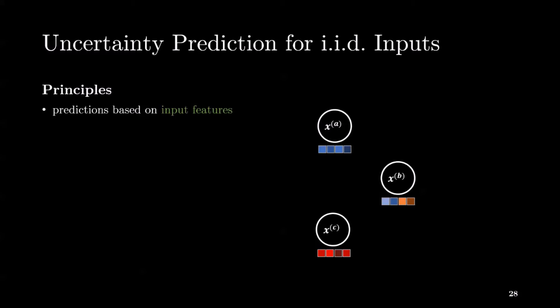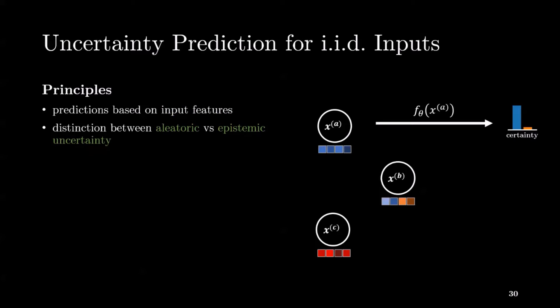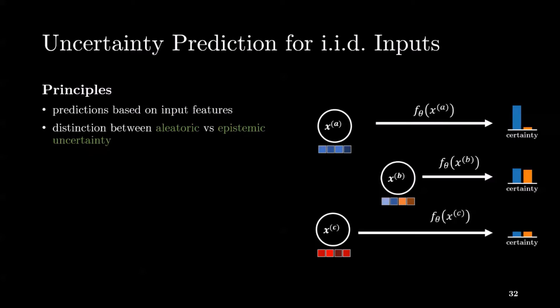Let's go back to the main motivation of our work. Uncertainty estimation for ID inputs like images or tabular data has already been explored. In this case, predictions are based on input features only and make the distinction between aleatoric and epistemic uncertainty. As already mentioned, a machine learning model would ideally assign a low overall uncertainty if we are sure about the predicted class, a low epistemic but high aleatoric uncertainty if we are sure to predict around 50-50, or a high overall uncertainty if we are unsure about our predictions and the data is very different from the training data. For ID inputs, many models for uncertainty estimation exist like Ensembles, Bayesian neural networks and Gaussian processes.